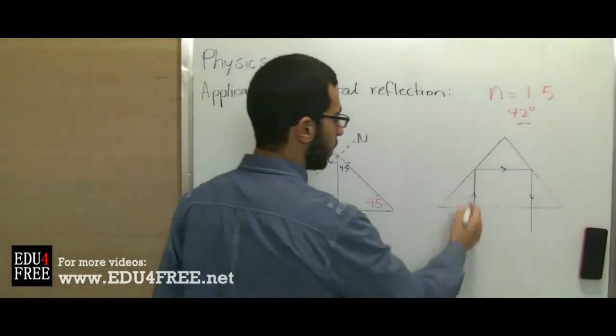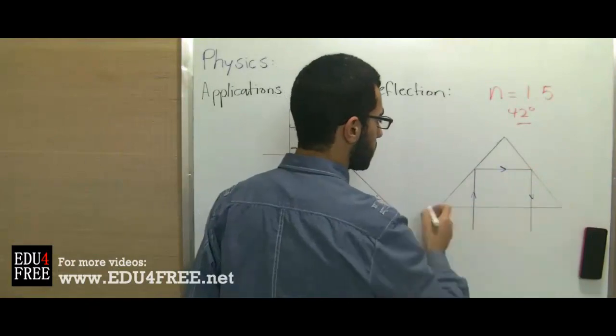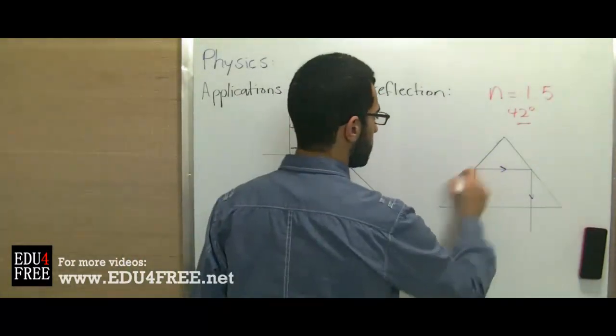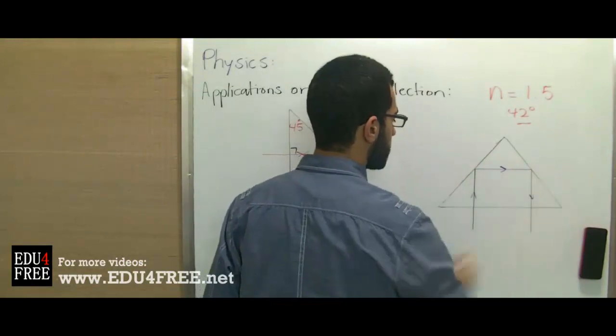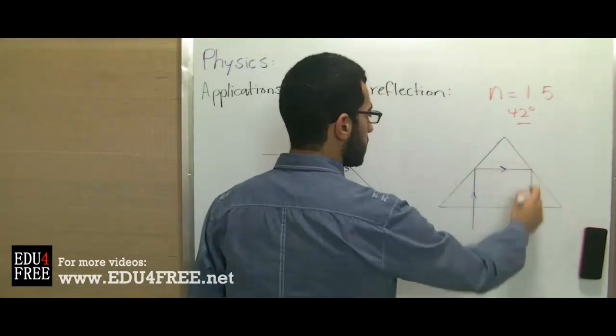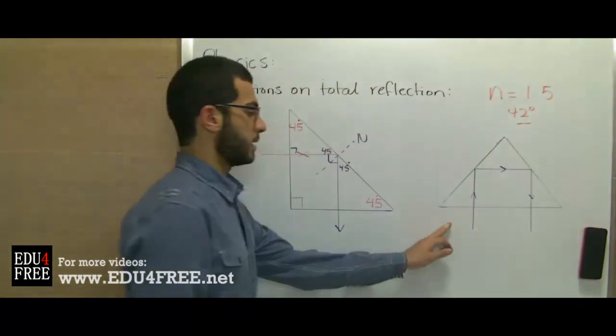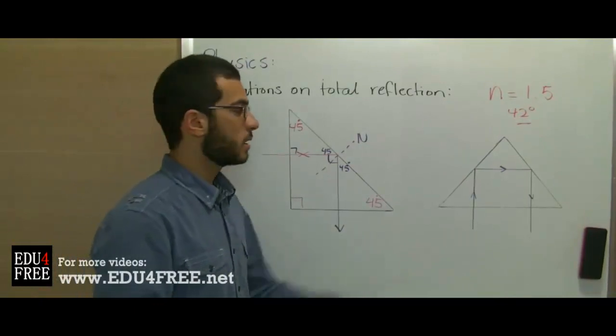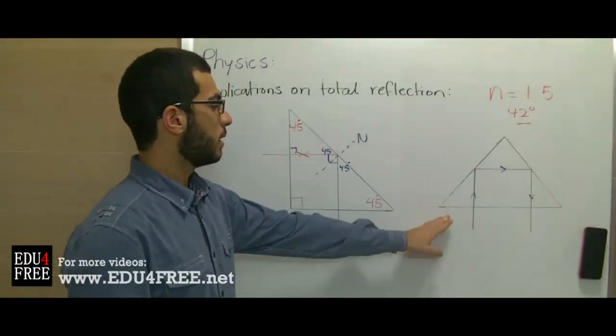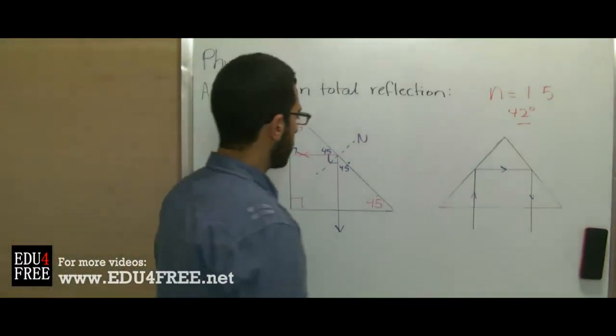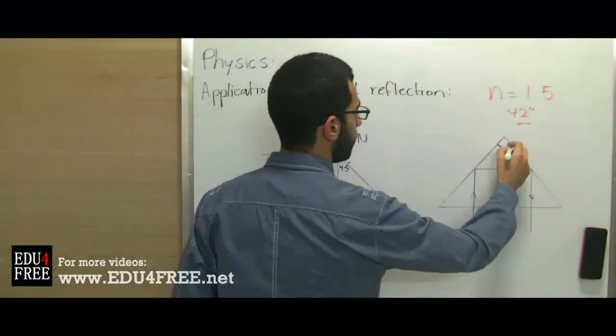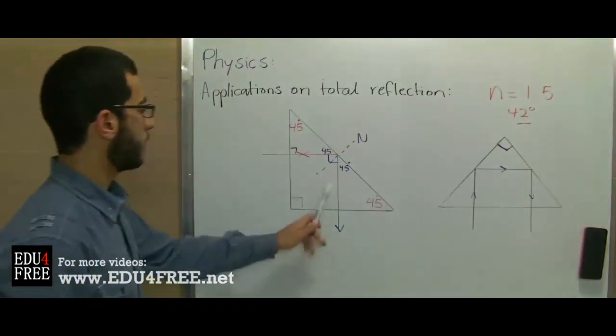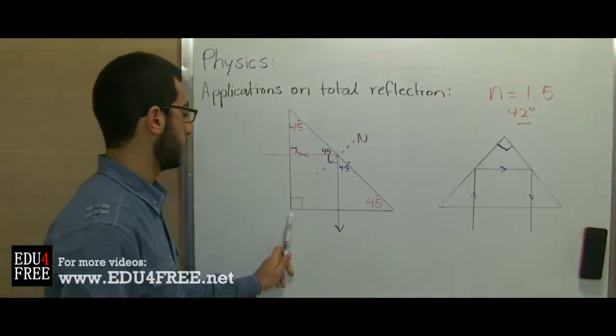In the other prism, if light goes through the hypotenuse of the triangle, so it falls at this angle, then it's reflected. Then it falls at this angle. This is how the light is reflected by 180 degrees through using the right angle prism. So here the right angle is in this place, and here the right angle is on this place.